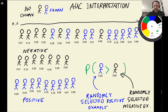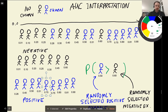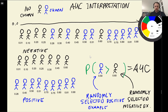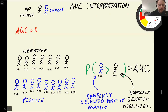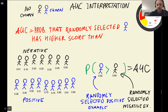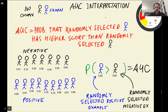We can do this experiment many times — each time selecting a random positive example and a random negative example, and checking whether the positive example has the higher score. This probability that a randomly selected positive example has a higher score than a randomly selected negative example is exactly what the area under the curve is telling us.